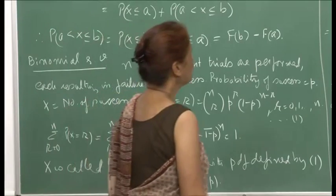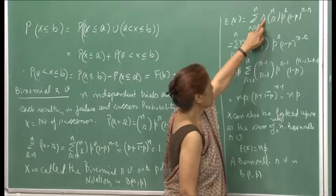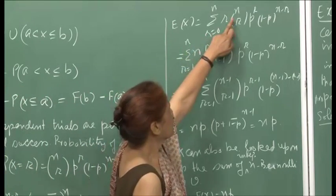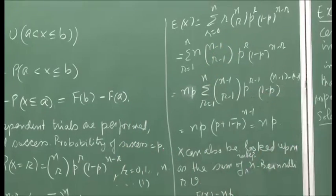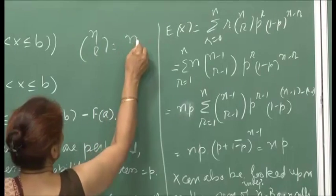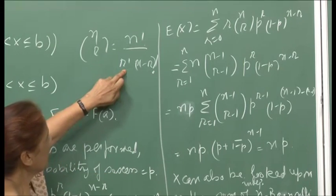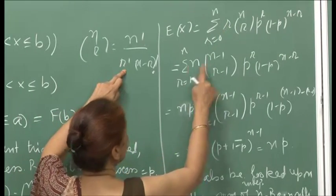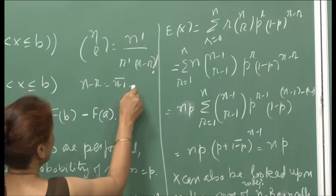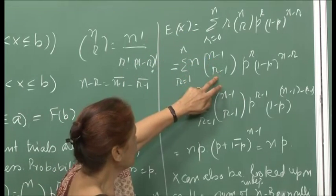We can immediately compute the expected value of this random variable. Writing E[X] as a sum of r · nCr · p^r · (1−p)^(n−r) for r = 0 to n, we note the r = 0 term contributes nothing. We can write nCr as n!/r!(n−r)!, so one factor of r cancels, and we take out n, leaving (n−1)!/((r−1)!(n−r)!) = (n−1)C(r−1), and reindex the sum to run from r = 1 to n.